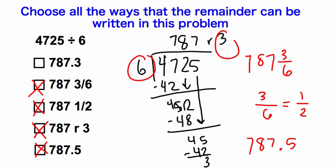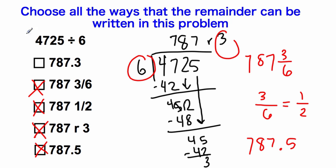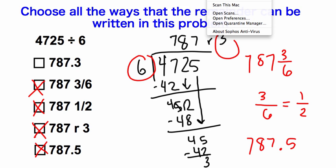Go ahead and try your Google form. When you do your problems, split your paper into 3 parts: show how to get the remainder, how to change that to a fraction, and how to change that to a decimal. Then choose your answers to make sure you get all of them correct. Good luck and we'll see you tomorrow.